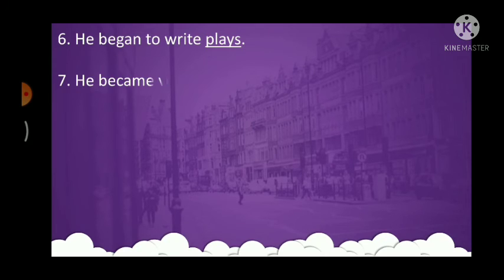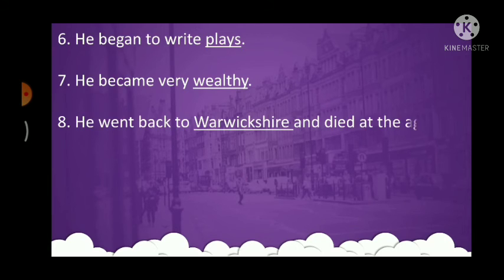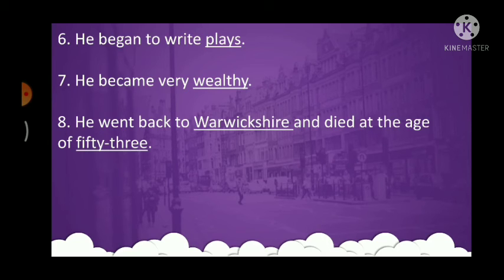7. He became very blank. The answer is wealthy. 8. He went back to blank and died at the age of blank. The first answer will be Warwickshire. He went to Warwickshire and died at the age of 53.